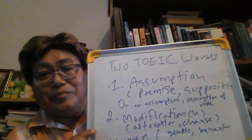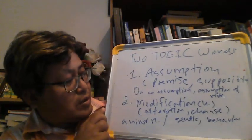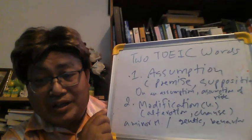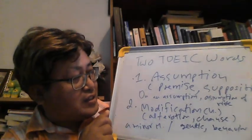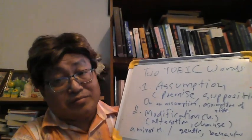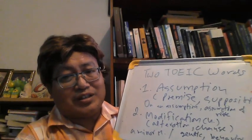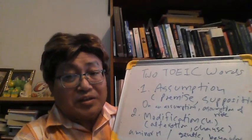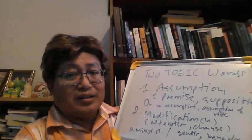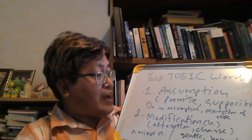Number one: assumption. Number two: modification. Assumption means premise or supposition. Of course, assumption is like your belief — it's a rather difficult word. Some collocations are the following: on an assumption.